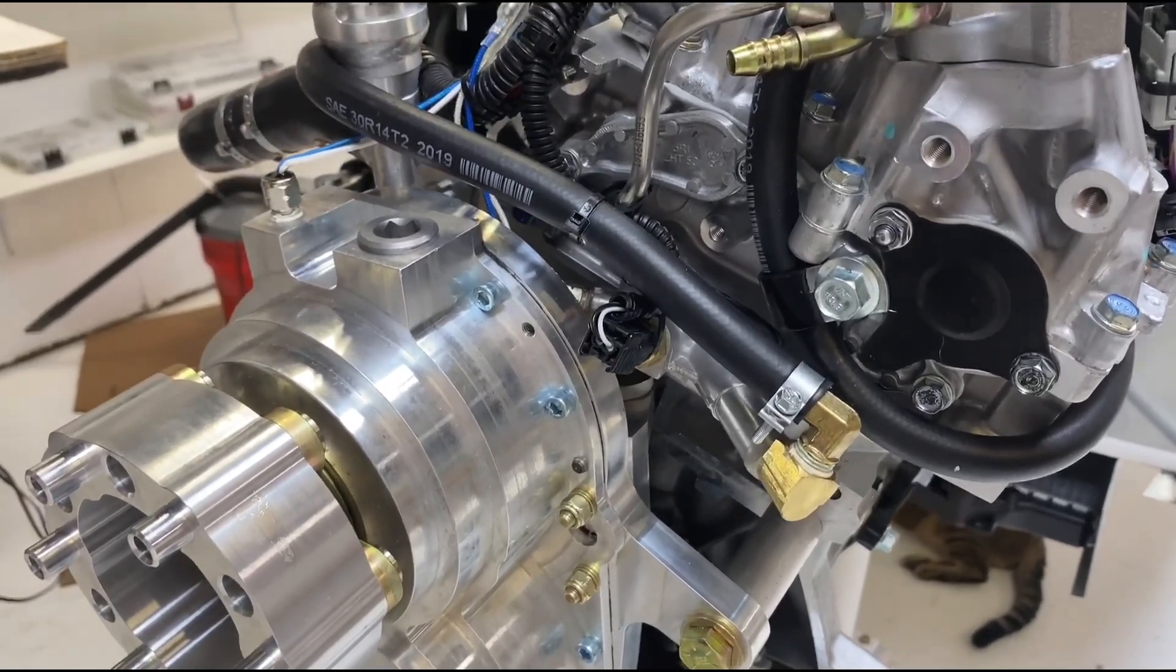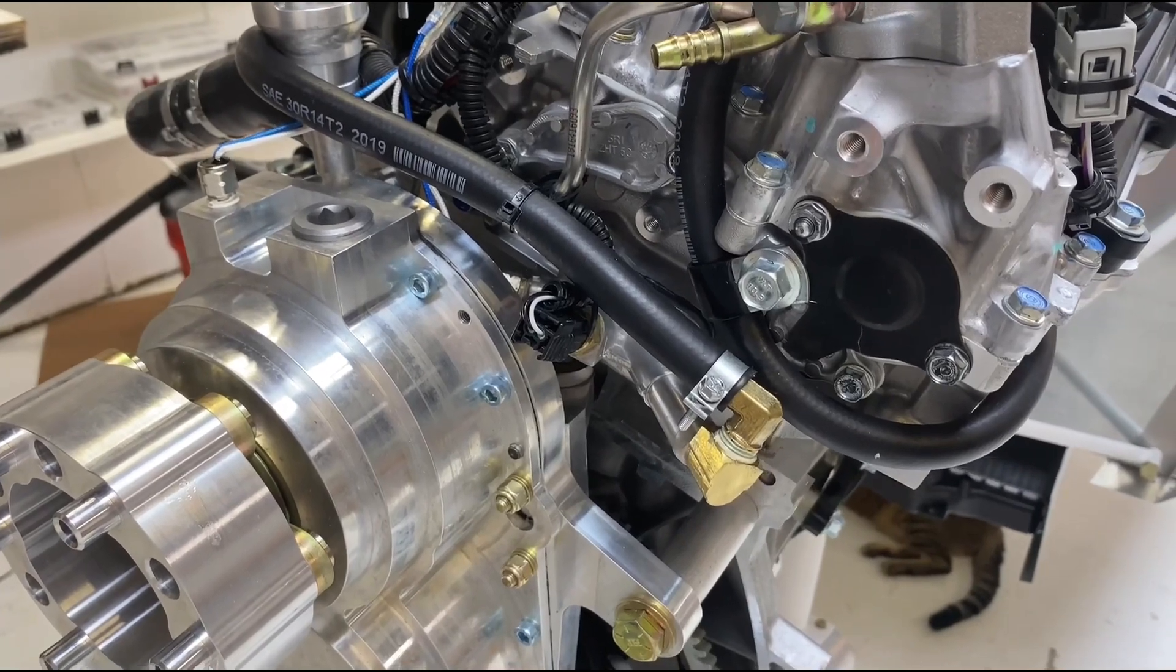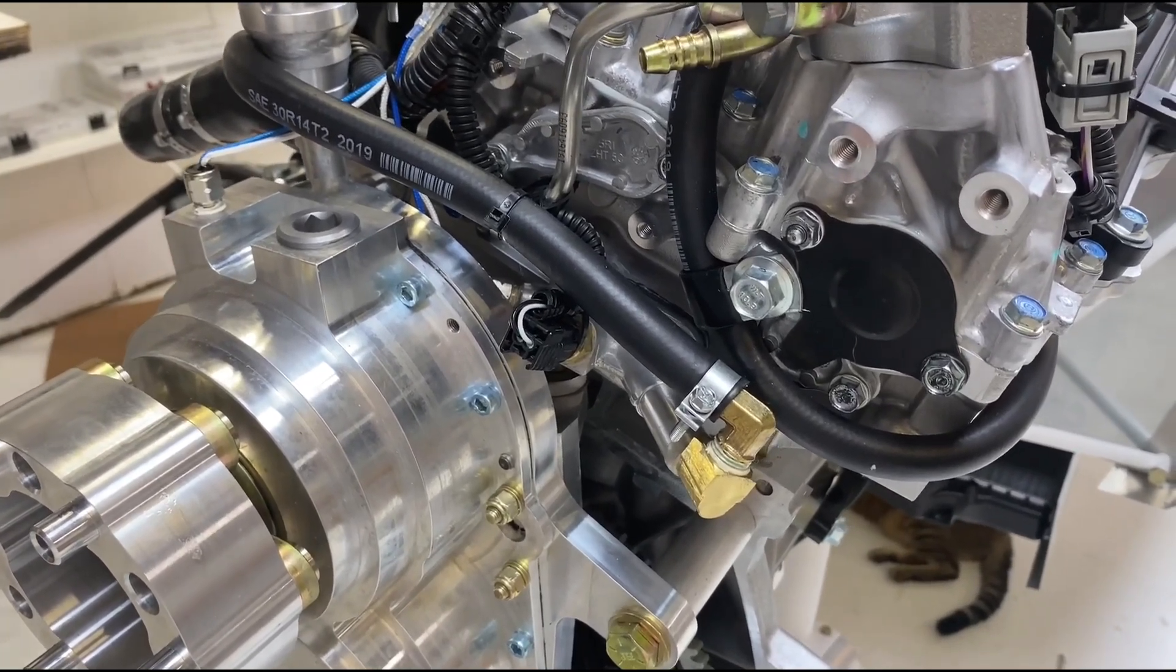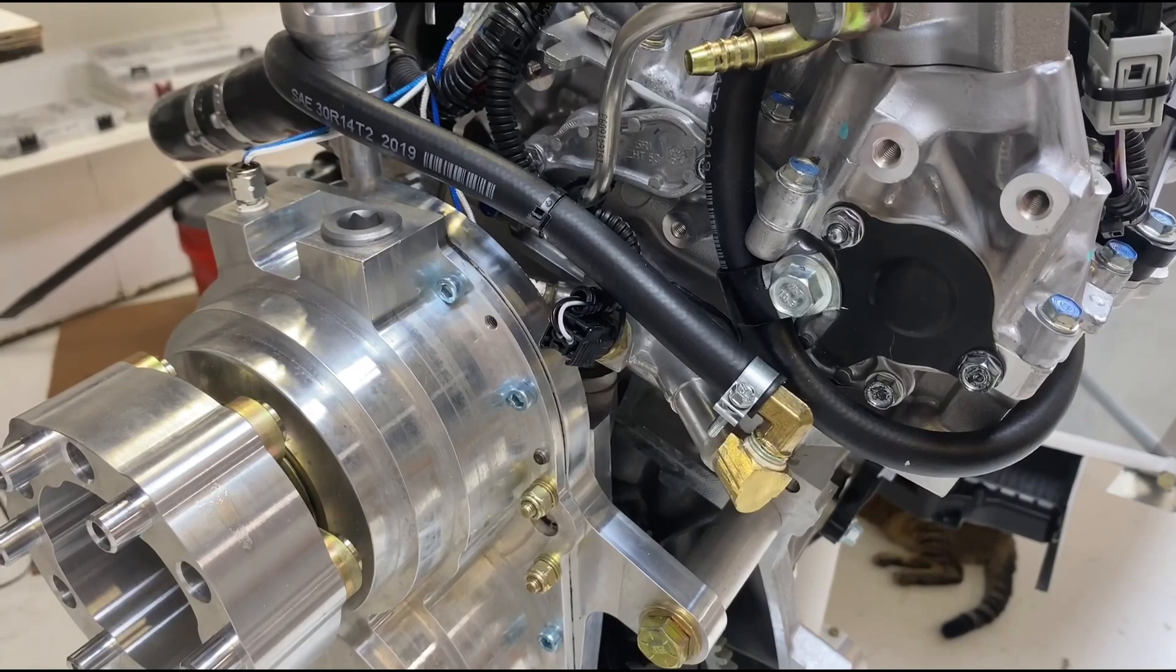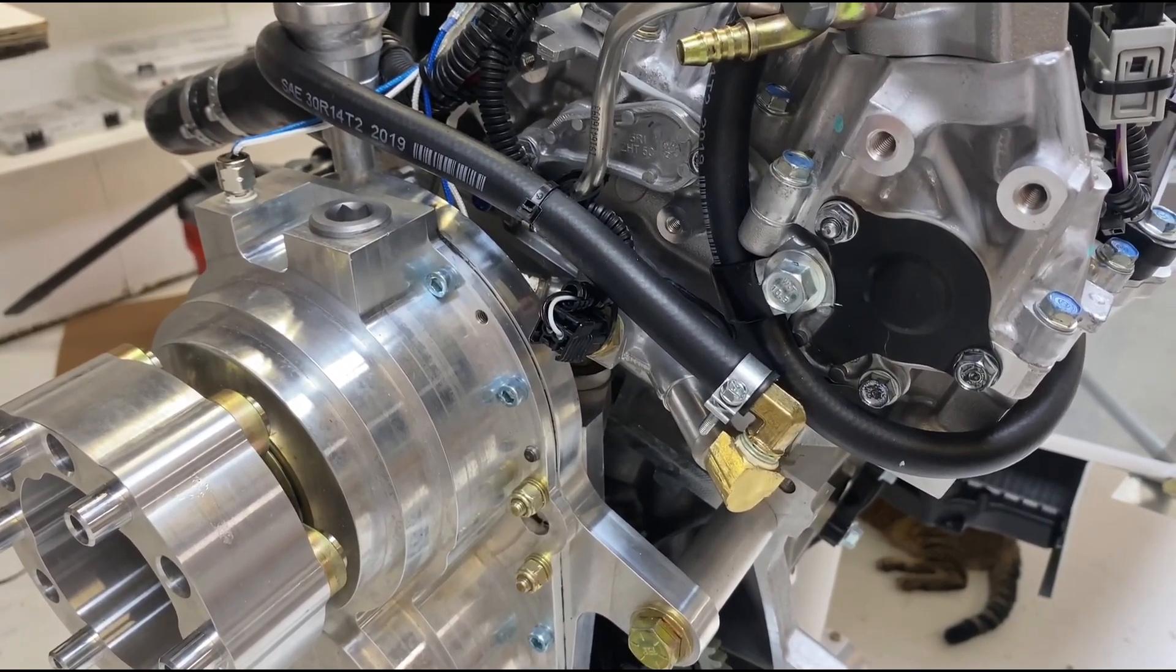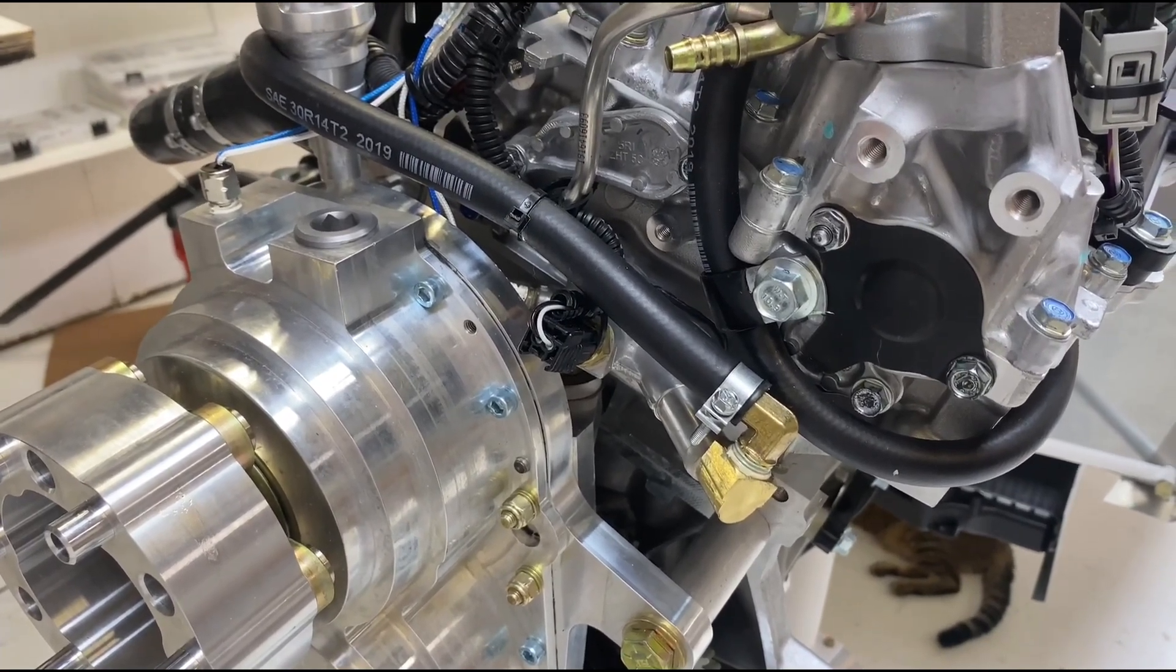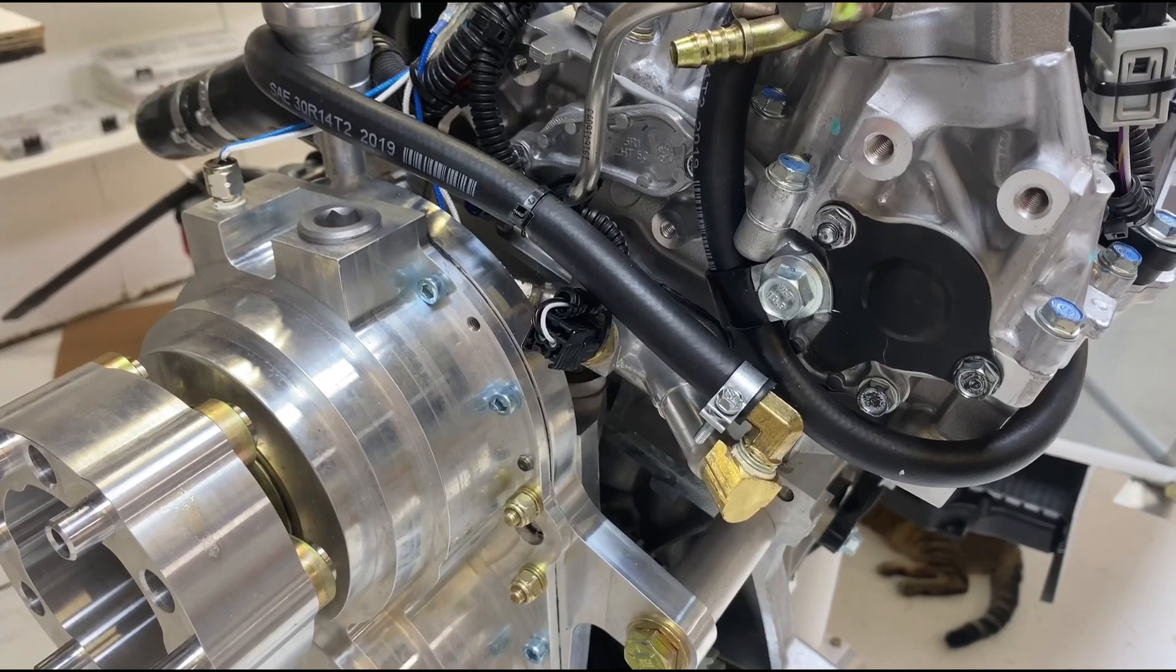This is the installation of the Viking heater in a Zenith 750 airplane, specifically to the 130 engine. We're going to start up at the cylinder head where the hot coolant exits after it has been heated by the engine, and it is then going to be routed from there to your heater core which is inside the plane.